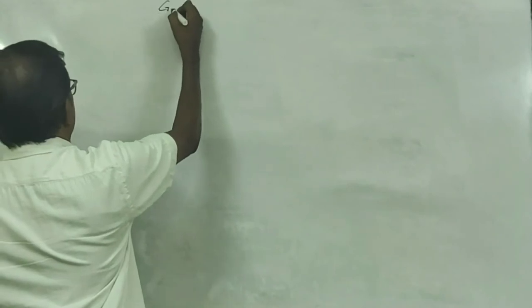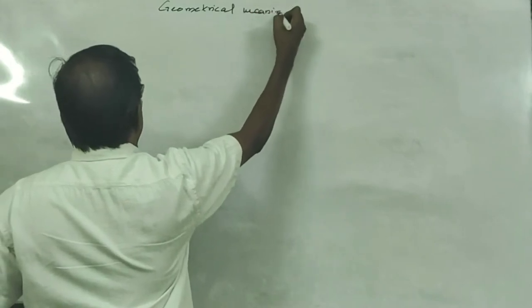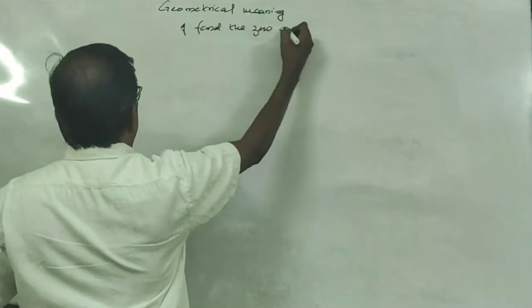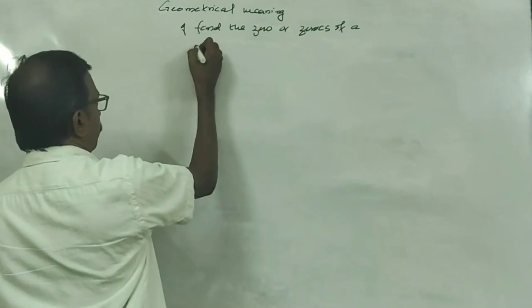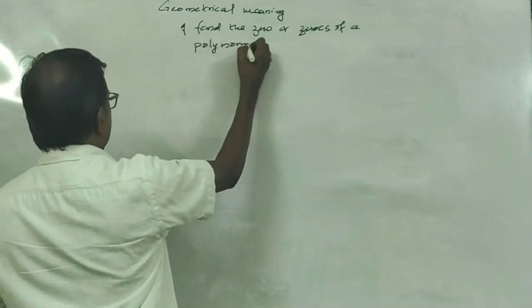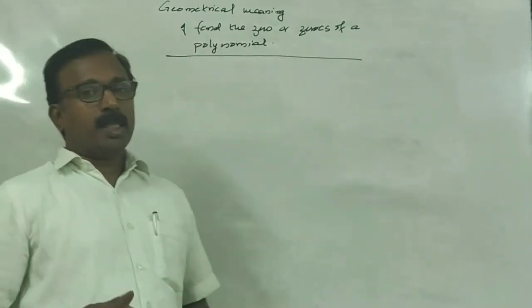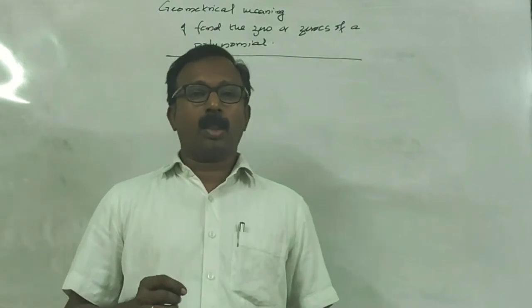The next portion is the geometrical meaning of finding the zero or zeros of a polynomial. It is very simple to find the zero or zeros of a polynomial if we draw the graph of a polynomial.